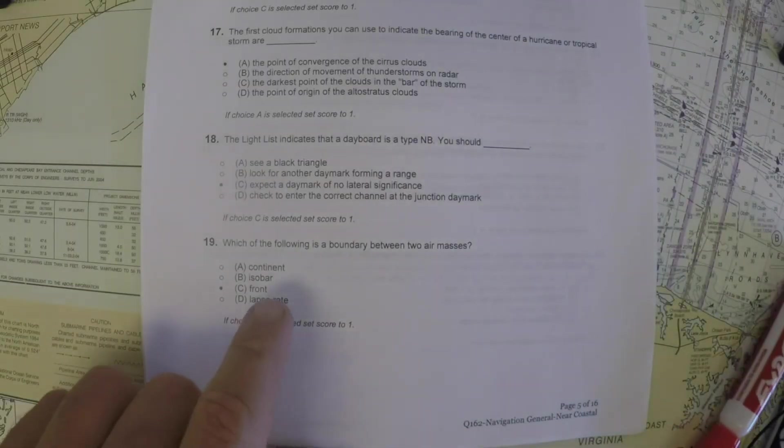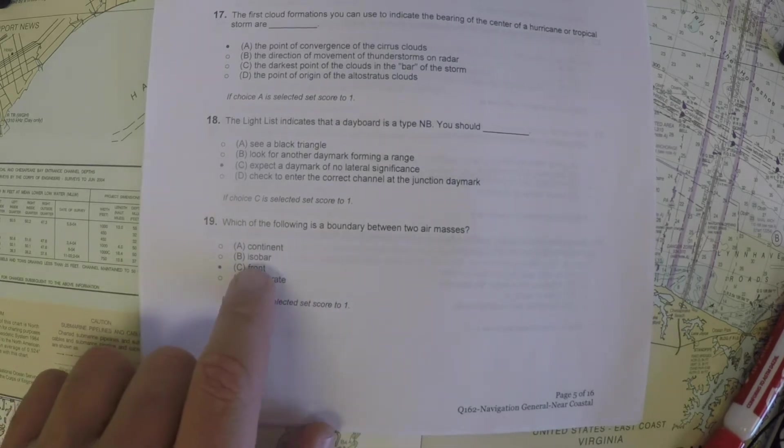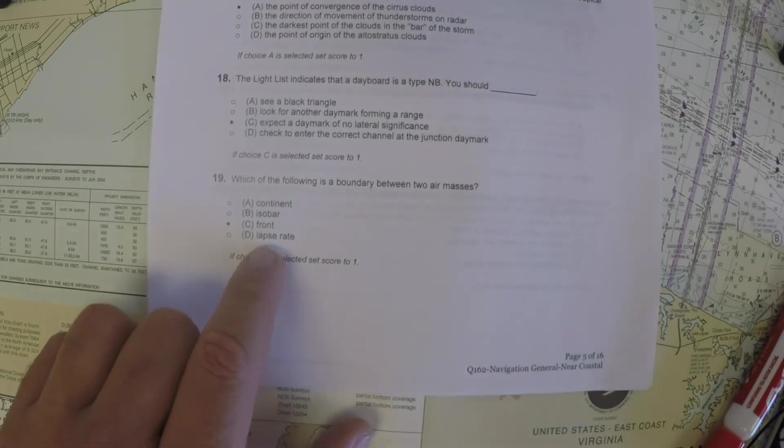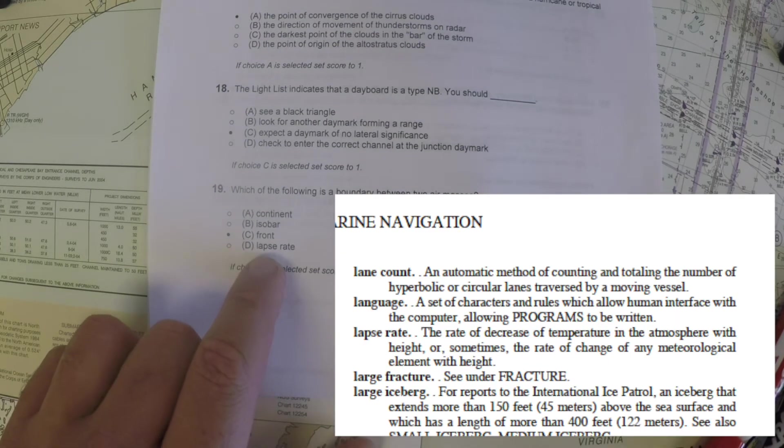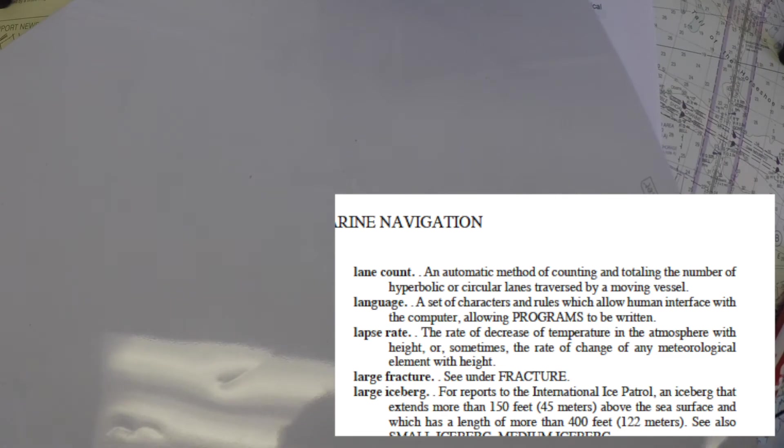So it's useful in that sense. The question itself is, what is the boundary between two air masses? So that's not what we're looking at for isobars there. The other incorrect answer is the lapse rate. And that refers to, it's called the adiabatic lapse rate.